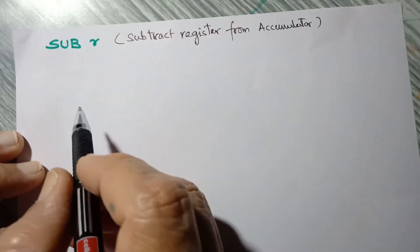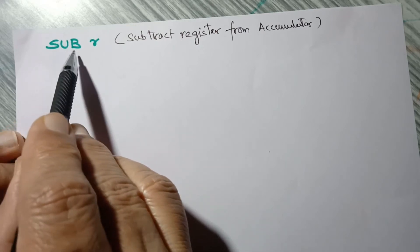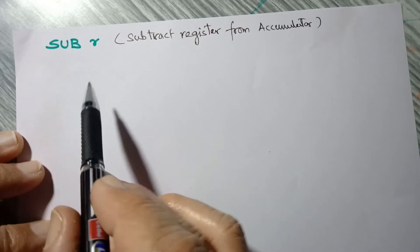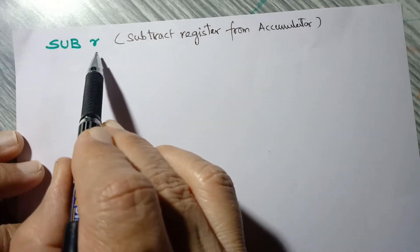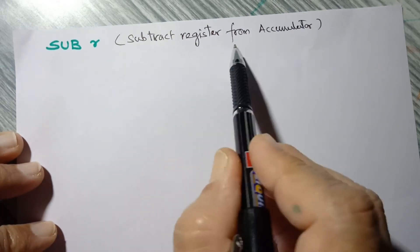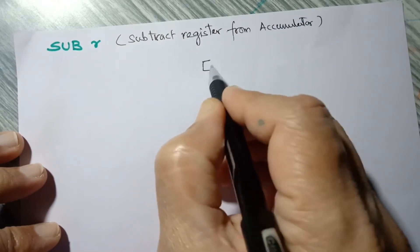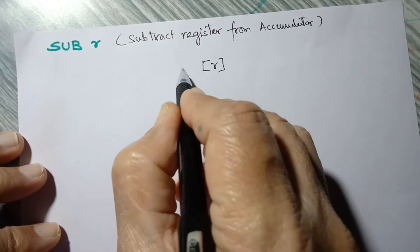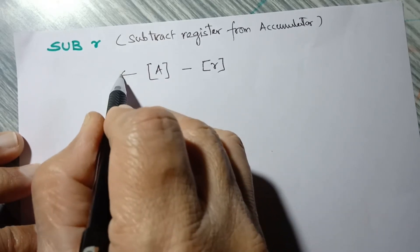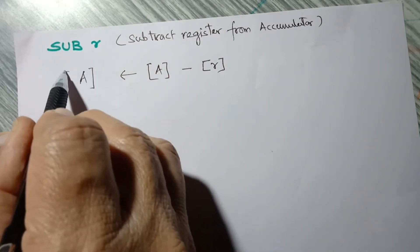Let us study the subtract register instruction. SUB — these three letters indicate that the operation is subtract, and small 'r' indicates that it is a CPU register. How to read this instruction: subtract register from accumulator, meaning the content of the specified register R are subtracted from the contents of the accumulator and the result is placed in the accumulator.